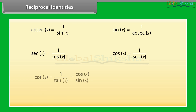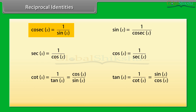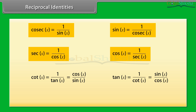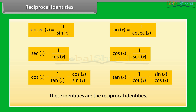Reciprocal Identities: Look at these identities. Cosecant X is equal to 1 by sine X; sine X is equal to 1 by cosecant X. Secant X is equal to 1 by cosine X; cot X is equal to 1 by tan X, which is equal to cosine X by sine X; and tan X is equal to 1 by cot X, which is equal to sine X by cosine X. These identities are the reciprocal identities.